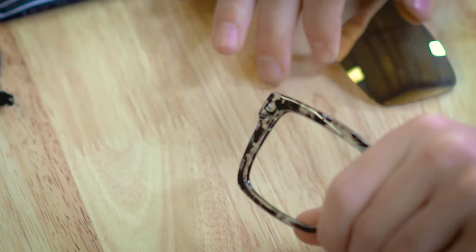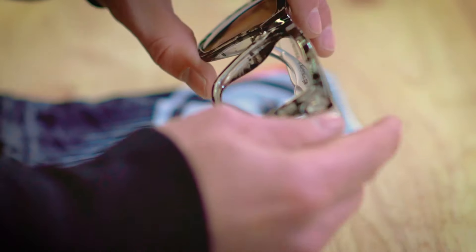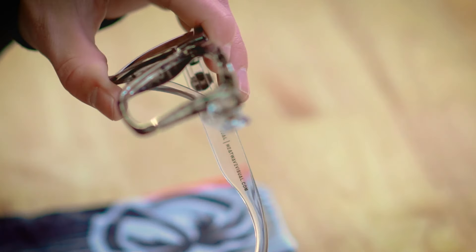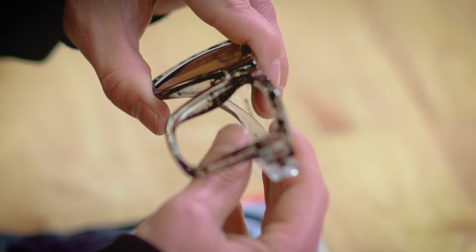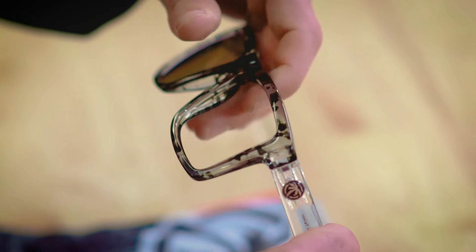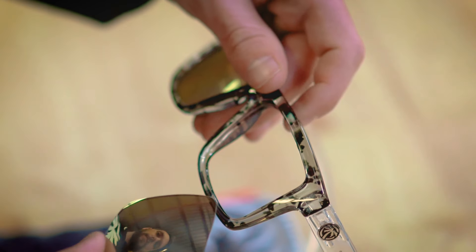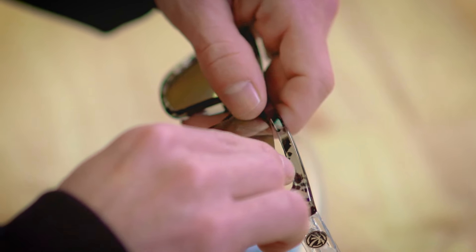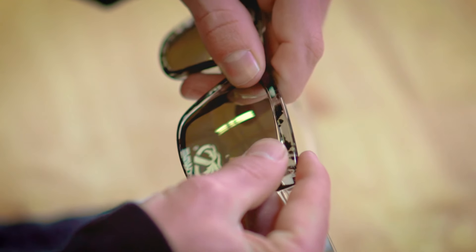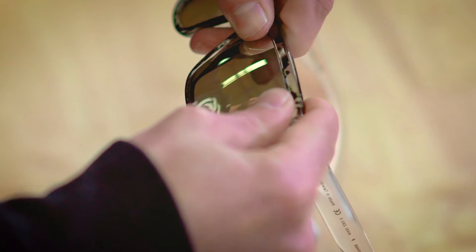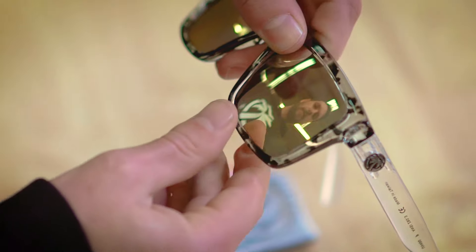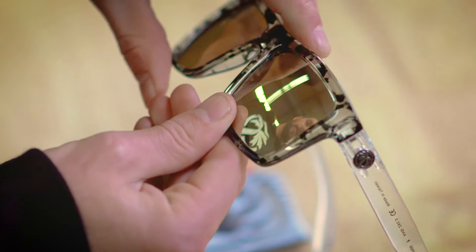Now installing the lens, have the frames facing towards you this time and open up those arms. With your non-dominant hand, hold the frame. With your other hand, start the lens into the channel at the nose bridge and then at the top. Walk it in all the way through and you'll hear a loud pop, then you know the lens is in.